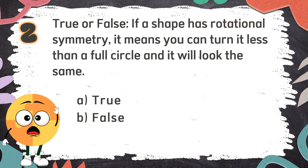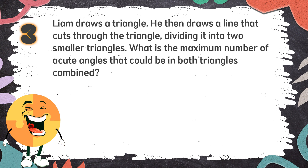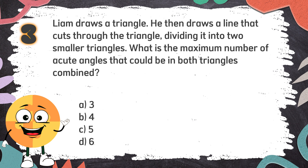The correct answer is A. True. Number 3: Liam draws a triangle, then draws a line that cuts through the triangle, dividing it into two smaller triangles. What is the maximum number of acute angles that could be in both triangles combined? The choices are: A. Three, B. Four, C. Five, D. Six.